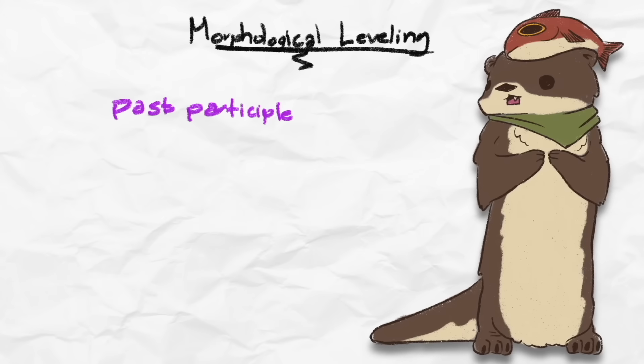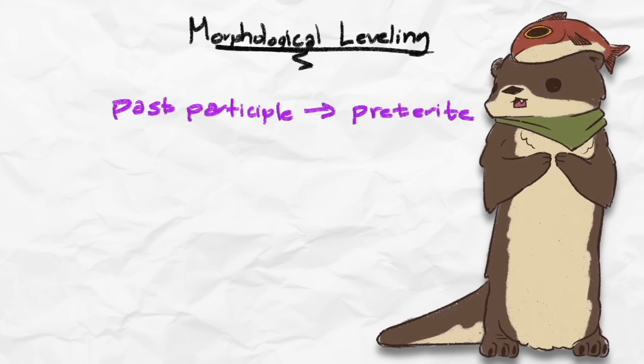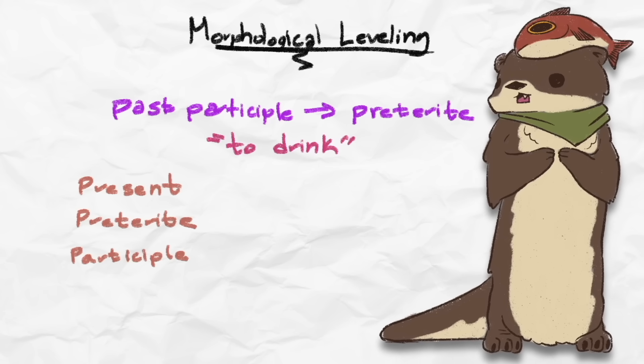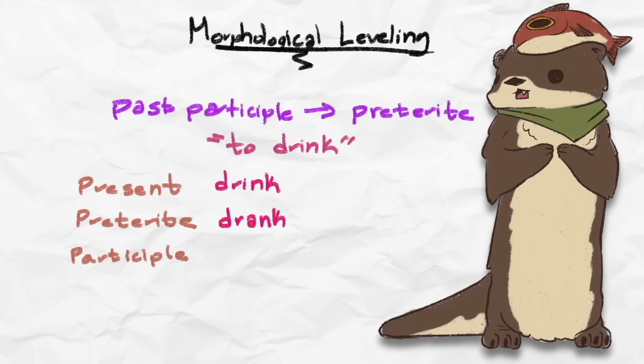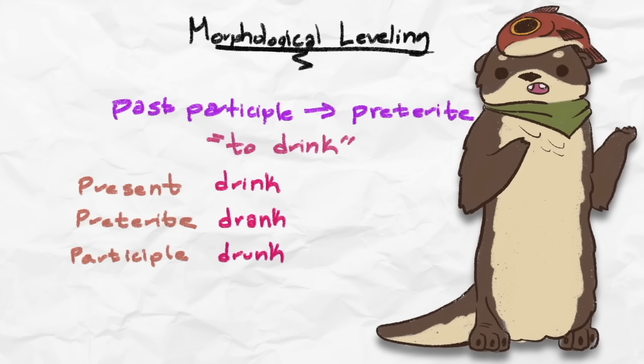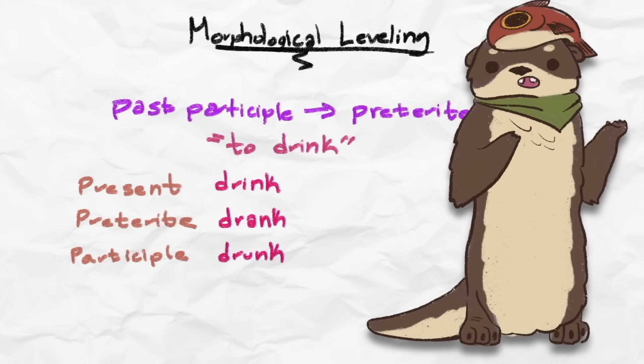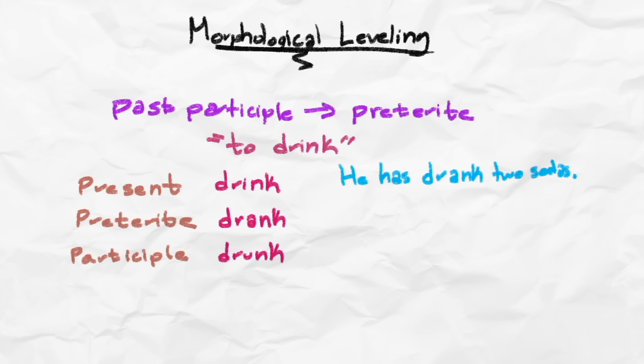To be more specific, the past participle of a verb is being replaced by the preterite form of the verb. For example, let's look at the verb to drink. Drink is in the present tense of the verb while drank is in the past tense, the preterite. But there's also the participle form of to drink, which is drunk. This version of the verb is used when there is an auxiliary verb like to have before it. So technically, it wouldn't be he has drank two sodas. Rather, it would be he has drunk two sodas.